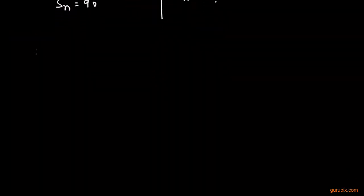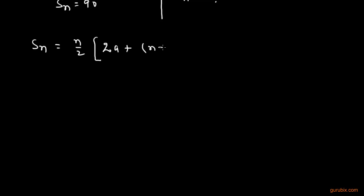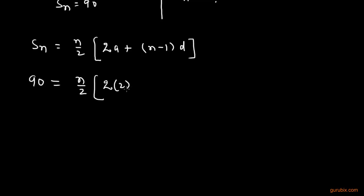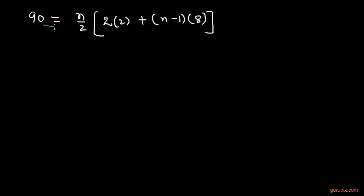To solve this, we use the sum formula: Sn = n/2 × (2a + (n−1) × d). We substitute Sn = 90, a = 2, and d = 8. Multiplying both sides, we get 180 = n × (4 + 8(n−1)).